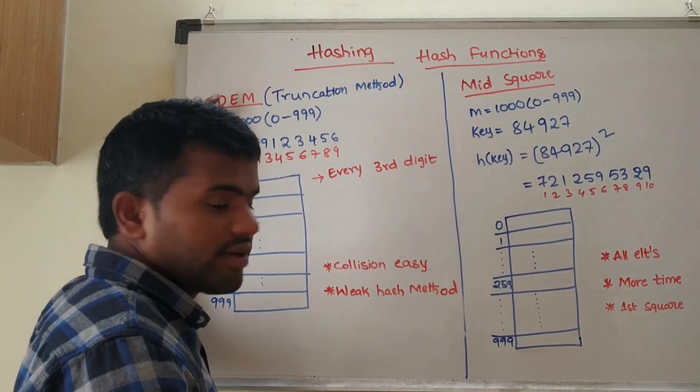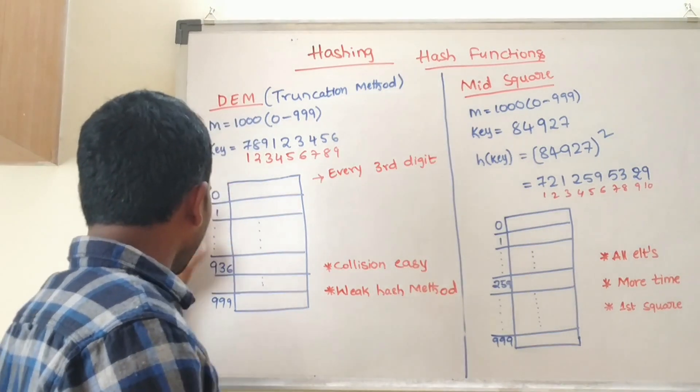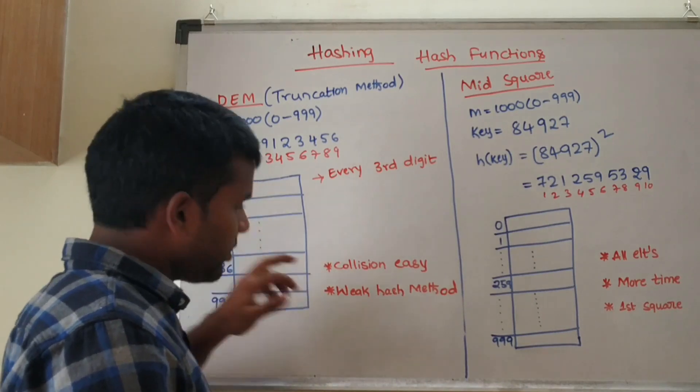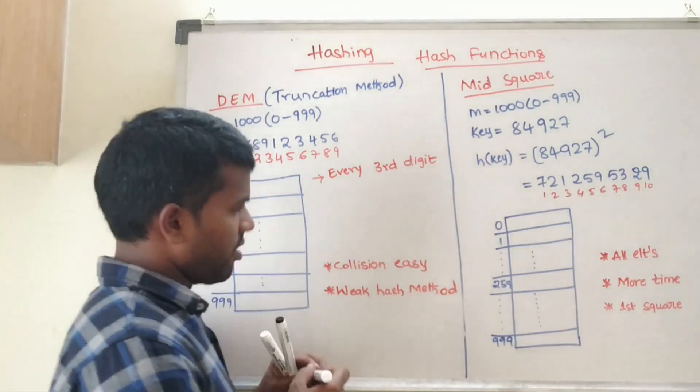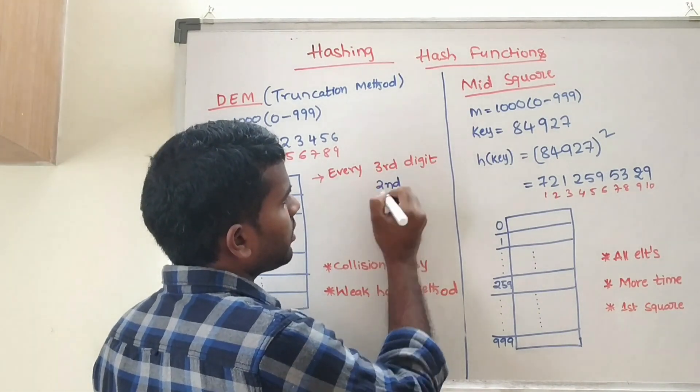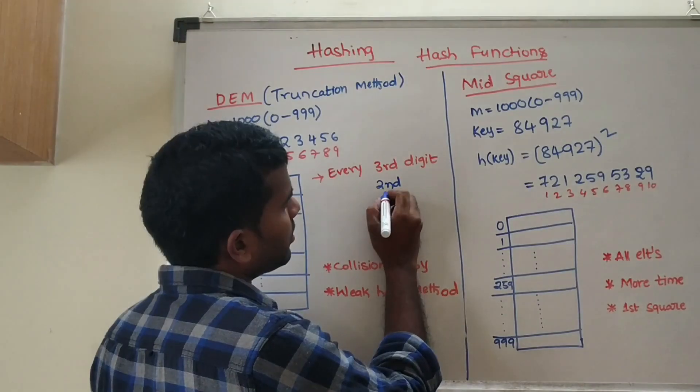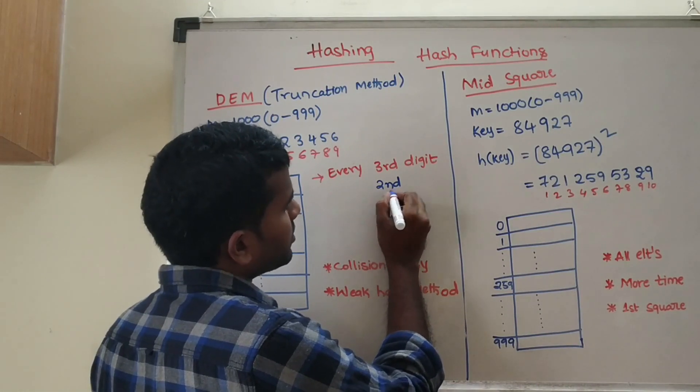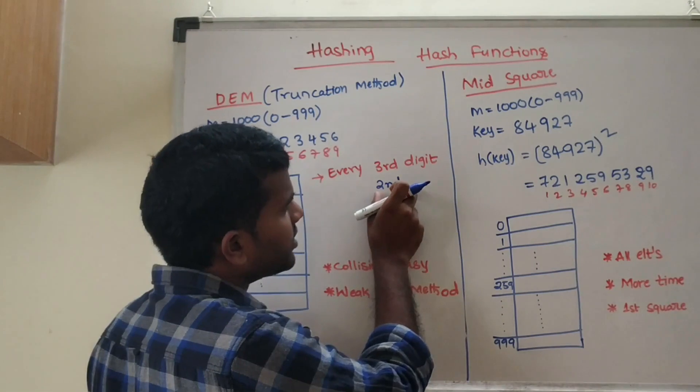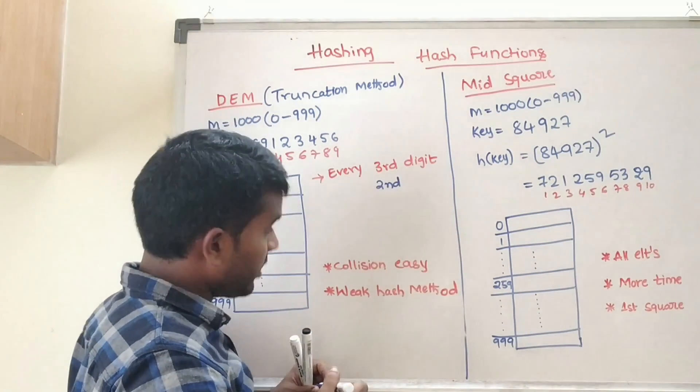These are the slots of the hash table, zero to 999. So this is the key. Here, this function defines that we can take any digit - every second digit, third digit, fourth digit, like that.